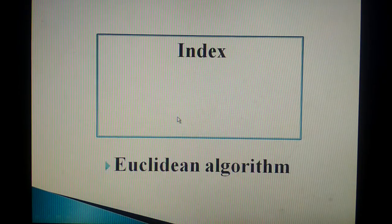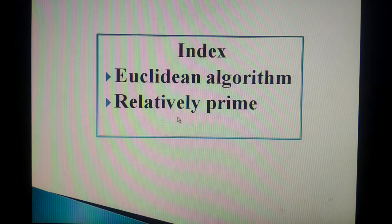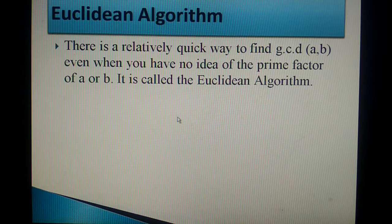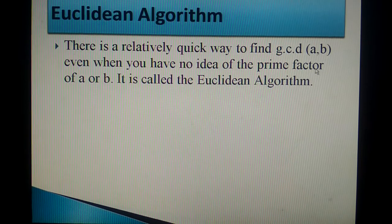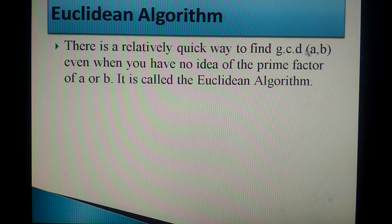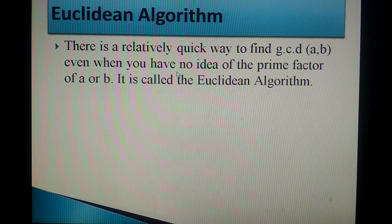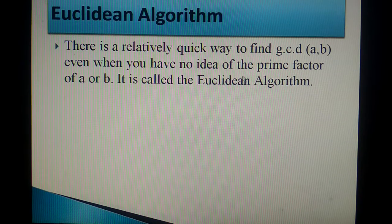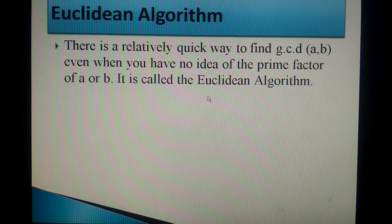Today we are going to discuss about the topic Euclidean Algorithm and Relatively Prime. First let us see what is Euclidean Algorithm. This is the easiest method to find the GCD of two values A and B, even when you have no idea about the prime factors of A or B. So this is called the Euclidean Algorithm.